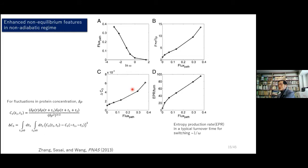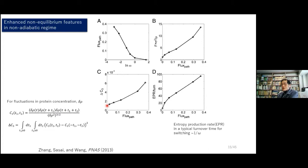This can be quantified: we plot the magnitude of the circular flux versus log omega. When going to the non-adiabatic regime, flux intensity becomes stronger. As flux becomes stronger, the Fano factor — the magnitude of fluctuation — becomes larger. The quantity C3 calculated from the three-time correlation function shows that this increase implies increased time irreversibility. Entropy production also increases as flux increases. So non-equilibrium dissipative features are enhanced as we go into the non-adiabatic regime.